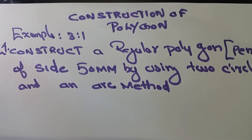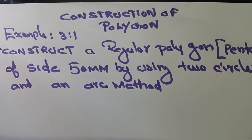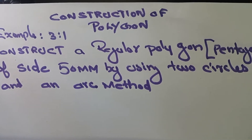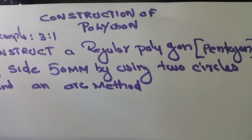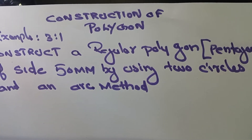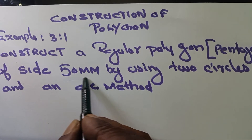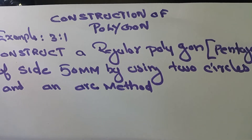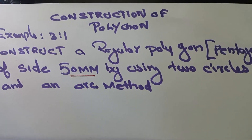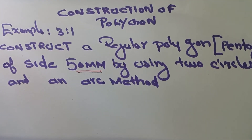Here we can see the question: construct a regular polygon, that means here that polygon is a pentagon, its side is given that is 50mm. Our polygon side is given as 50mm, by using two circle and arc method. That is our today's topic.